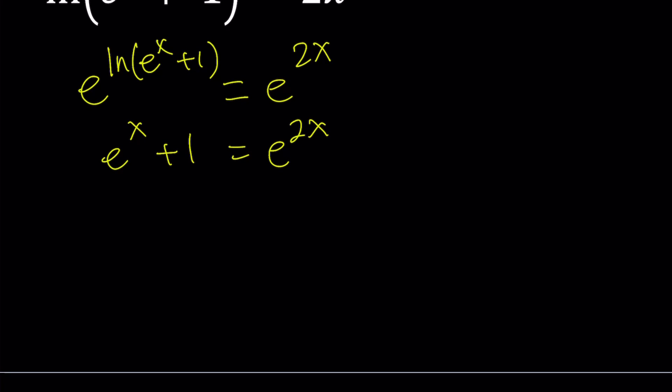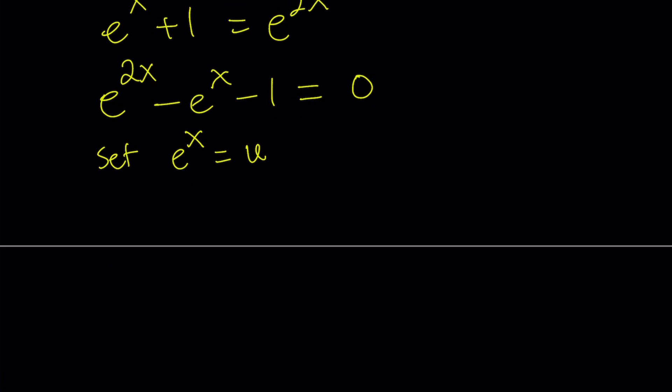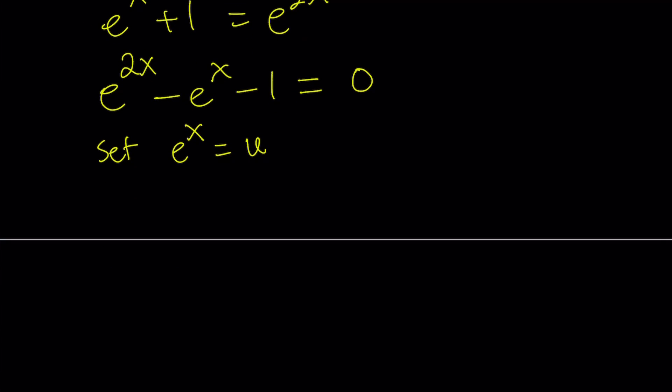This is the type of equation that could be turned into a quadratic. If I write it as e^(2x) - e^x - 1 = 0 and set e^x equal to something, how about u, then this becomes a quadratic. Replace e^x with u,